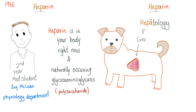In 1916, heparin was discovered by a second-year medical student, Jay McLean, in the physiology department of Johns Hopkins University, who isolated heparin from the liver of a dog. That's why we call it heparin — hepa means liver, hence hepatology, hepatic vein, hepatic artery, hepatitis, etc. You actually have heparin in your body naturally — heparin is a naturally occurring glycosaminoglycan. Whenever someone says the little guy can't get ahead without a PhD, shut up — a second-year medical student did it.